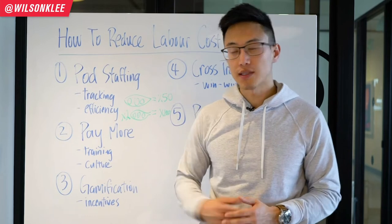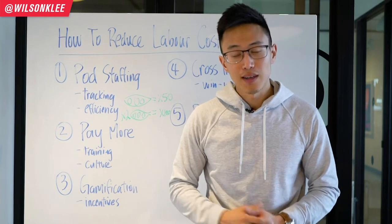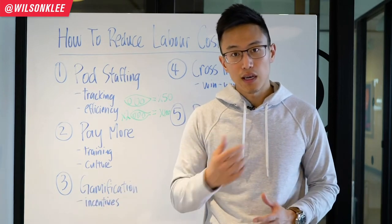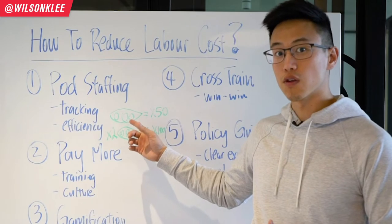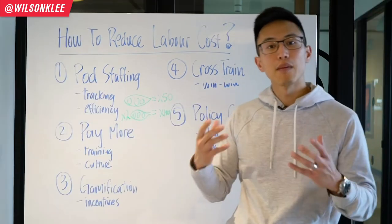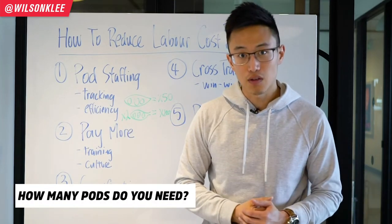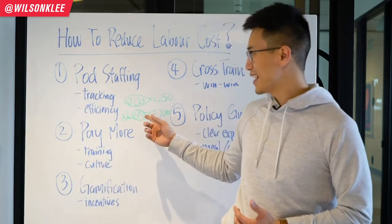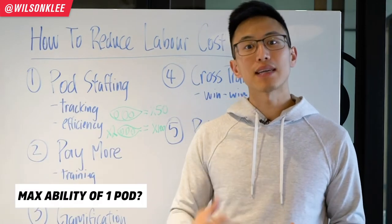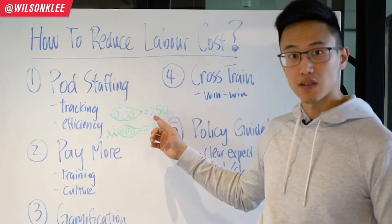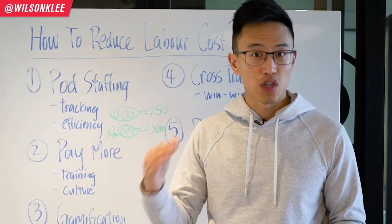The number one way to reduce your labor costs is pod staffing. Imagine you're running a restaurant servicing 50 customers at a lunch service, and you require three staff to service all 50 clients. Now imagine it's a Saturday and you have 100 people coming in — you would need two pods, six different staff. Pod staffing is about identifying the max capability that one pod can service, which allows you to scale up and scale down as your business cycle changes throughout the week.